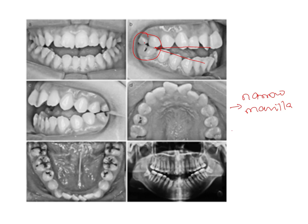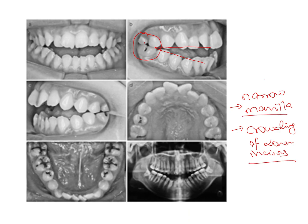The narrow maxilla develops because of pressures from the cheeks. And because the mandible is rotated downwards and backwards, there is also going to be crowding in the lower arch — crowding of the lower incisors. Because the maxilla is narrow, there may also be a tendency for posterior crossbite. So open bite, lower incisor crowding, narrow maxillary arch, and tendency towards posterior crossbite are the features seen in skeletal open bite.